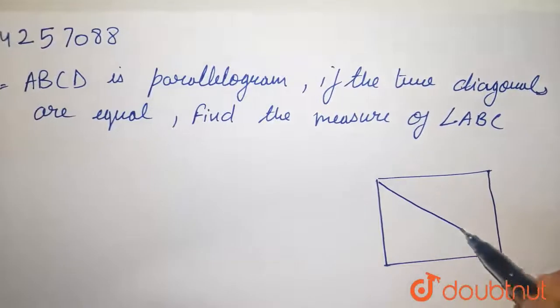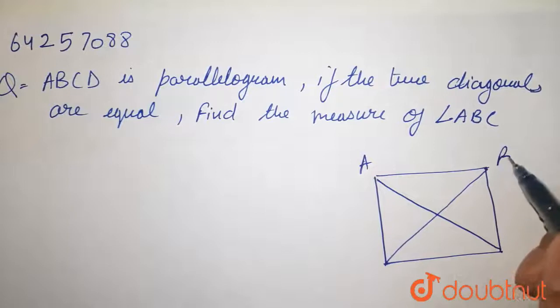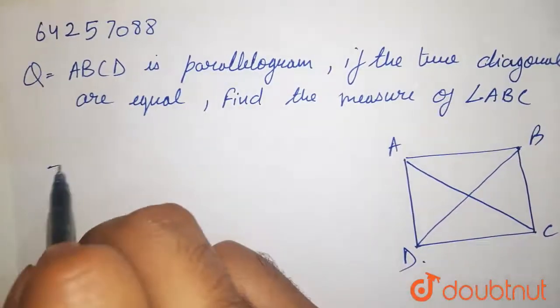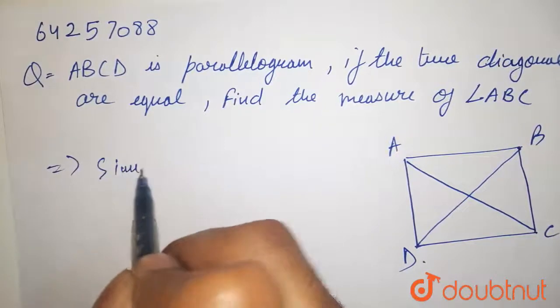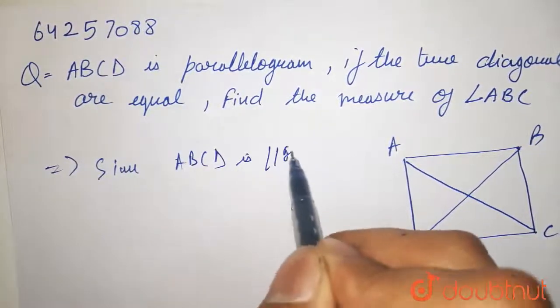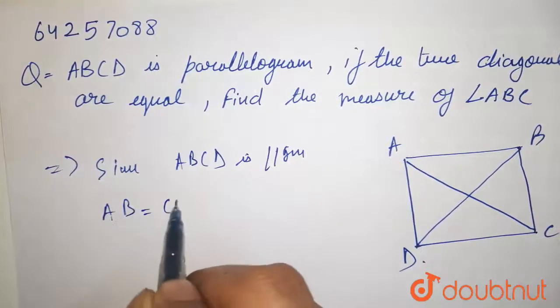And I give the name ABCD. Since ABCD is a parallelogram, that means AB is equal to CD and AD is equal to BC.